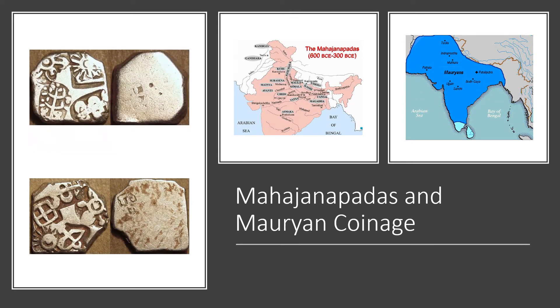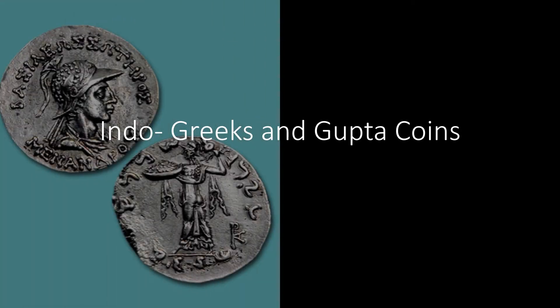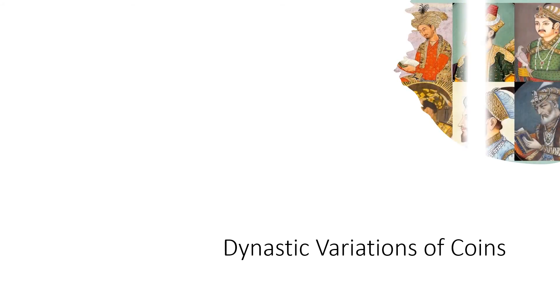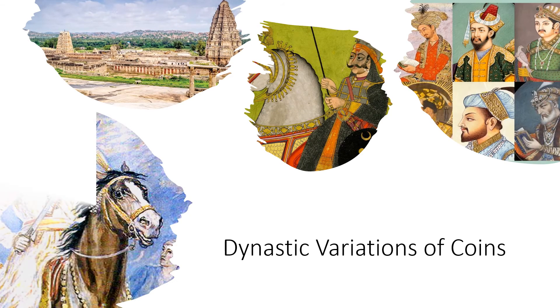The Indo-Greeks introduced the custom of printing portraits of mythological deities on coins. The most number of gold coins were produced in the Gupta period, which is between 320 to 470 CE — that is the reason why this period is known as the Golden period. The evolution of coins continued through subsequent Indian dynasties, from the Mughal and Rajput empires in the north to the kingdoms of Vijayanagara and Maratha in the south.